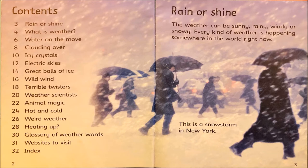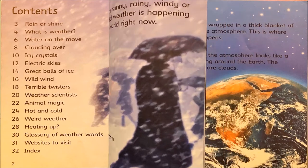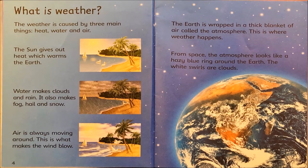Rain or shine. The weather can be sunny, rainy, windy, or snowy. Every kind of weather is happening somewhere in the world right now. This is a snowstorm in New York. Here is one of those questions: what is weather? After reading these two pages, I should be able to define weather.